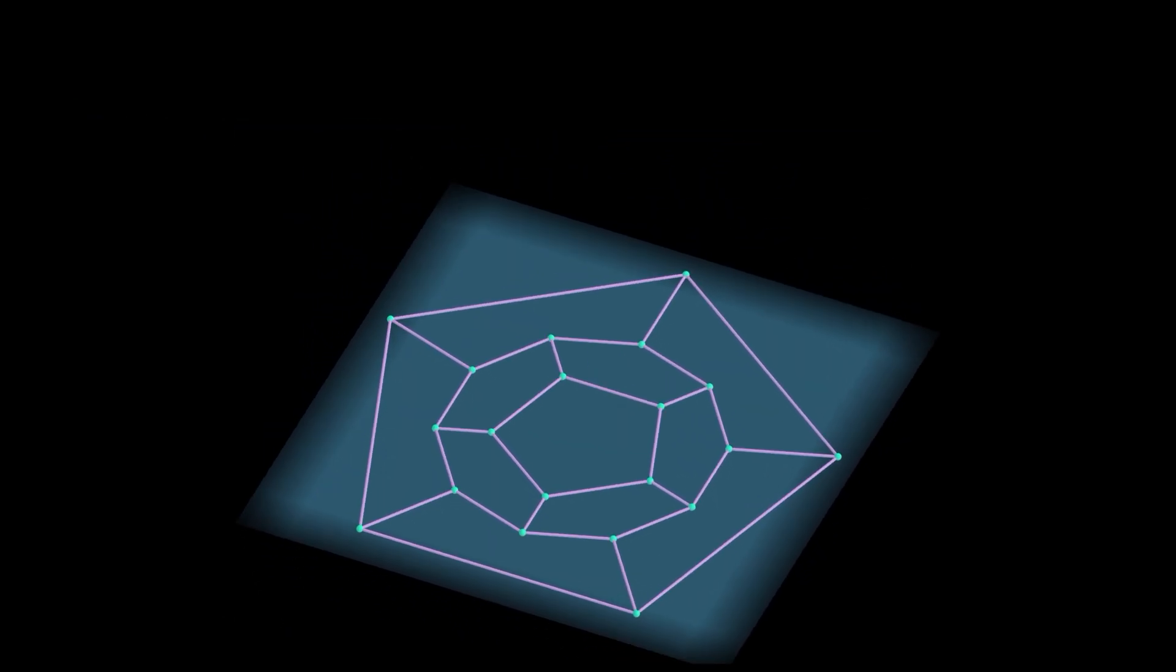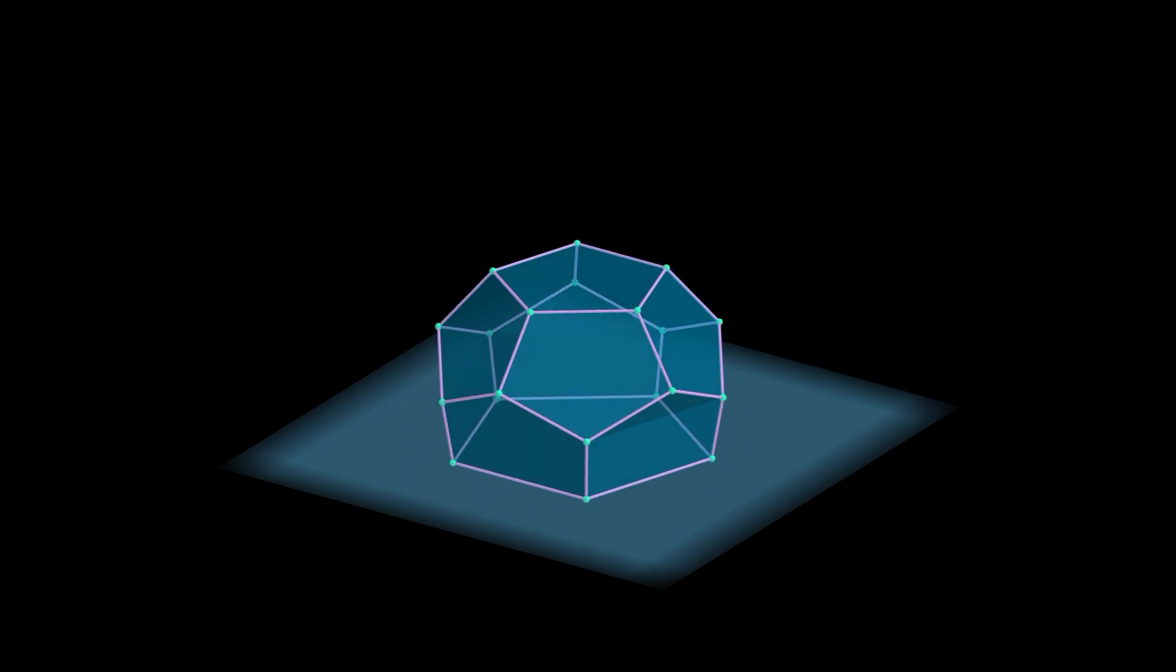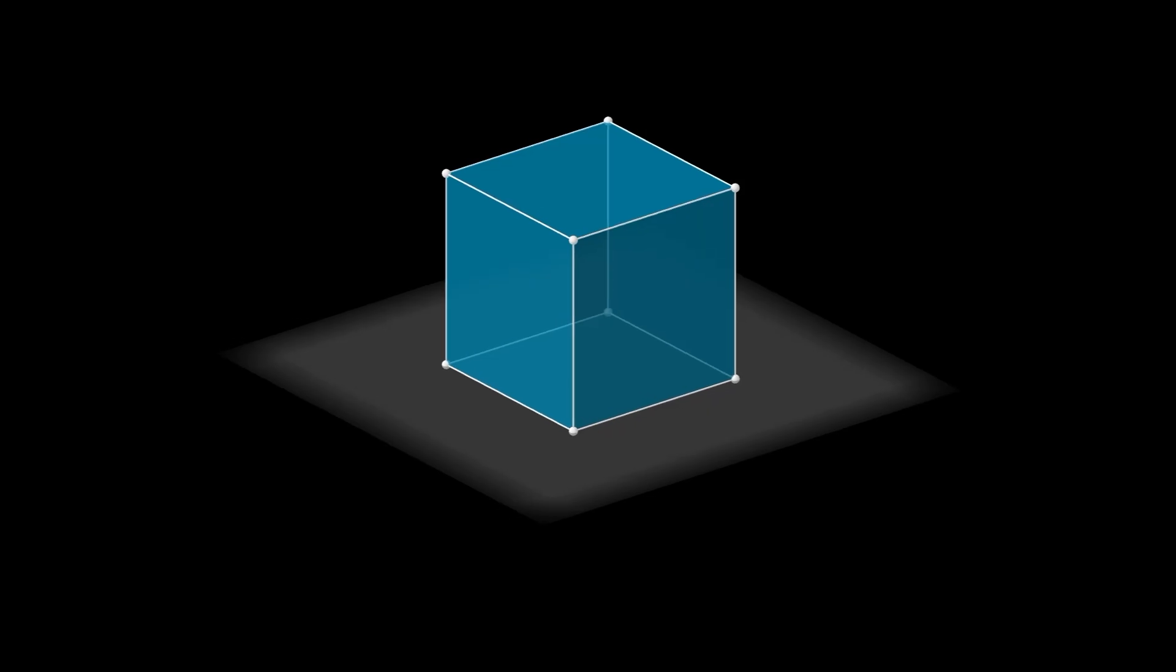Using the same flattening approach as we did for this dodecahedron, we can turn any convex polyhedron into a planar graph. But, to visualize Thurston's approach to proving Euler's polyhedron formula, we'll use a simpler example of a cube. Here's how it works.